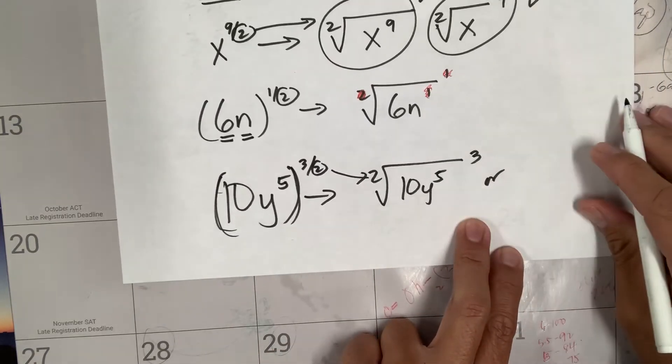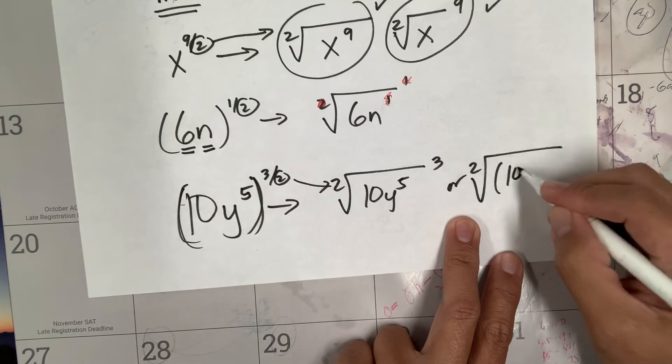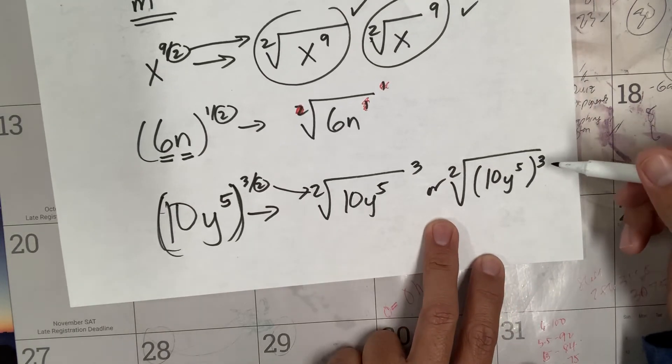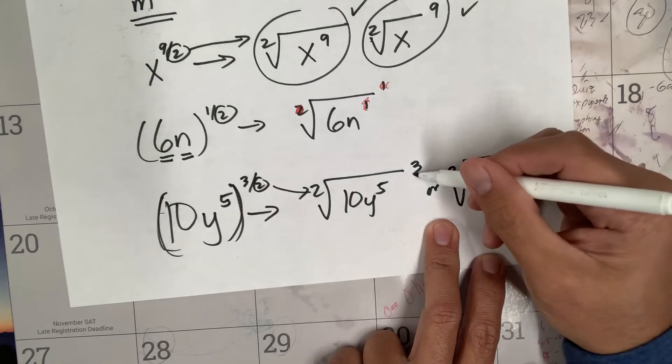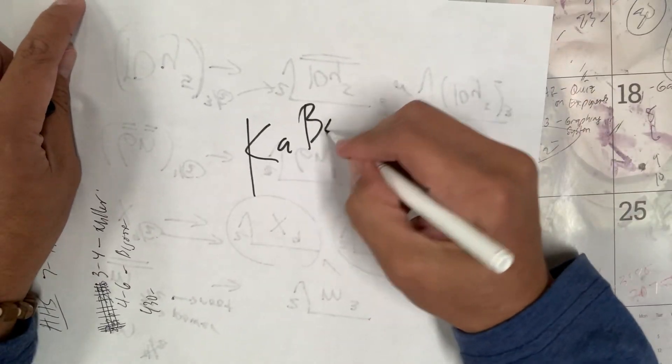And you can have the three here or you can have the three inside, but you need to have then y to the fifth to the third power. If you put it inside there must be a parenthesis. If you keep it outside you don't need to have parenthesis here. It's easy, right? Have a good day.